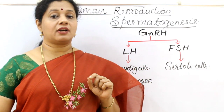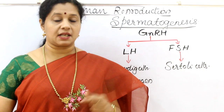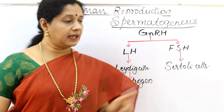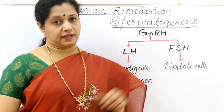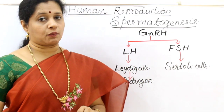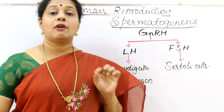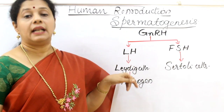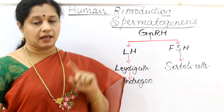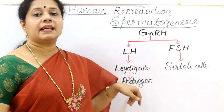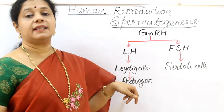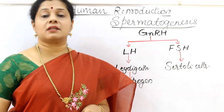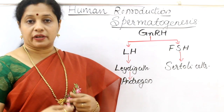GnRH from the hypothalamus tells the anterior pituitary to secrete two gonadotrophins: LH (luteinizing hormone) and FSH (follicle stimulating hormone). LH acts on Leydig cells — you can remember L for LH and Leydig cells — and the Leydig cells will stimulate the synthesis of androgens. Androgens in turn help in the process of spermatogenesis. So it is a hormone-driven process.